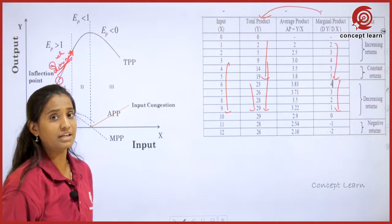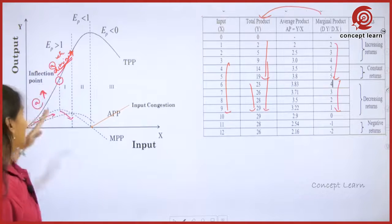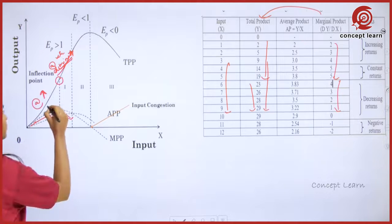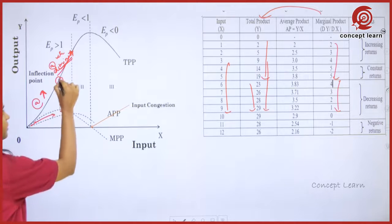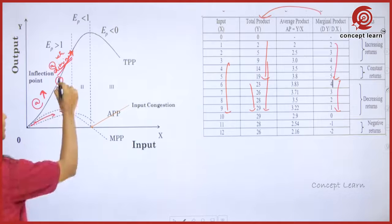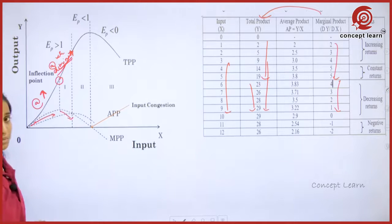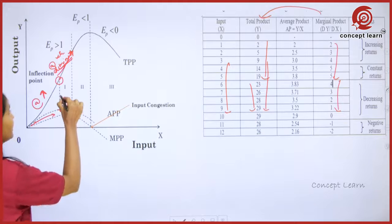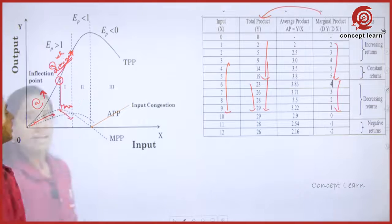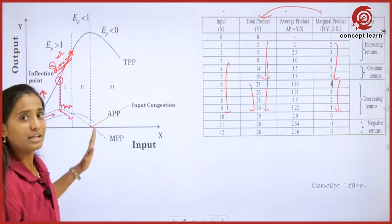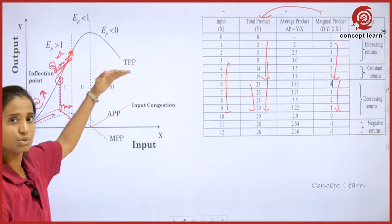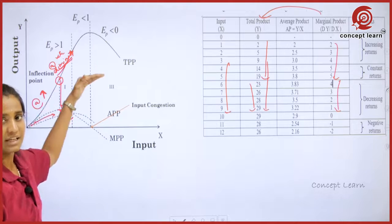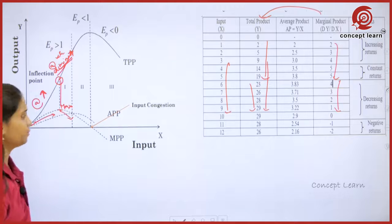What is the inflection point? The inflection point is a point on the TPP graph where it converts from convex to concave — that is, from increasing rate to decreasing rate. We can find the inflection point when MPP is at its maximum.